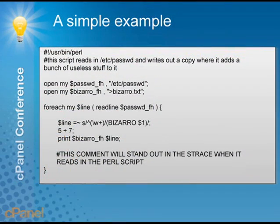We're going to have a simple example here first. This is a little Perl script — don't worry if you don't know Perl, it's not important. The first thing you'll see is we're invoking Perl with a shebang line, then a comment describing what the script does. It's opening two files: /etc/passwd for reading, and bizarro.txt for writing. After that, there's a foreach loop going through each line of /etc/passwd and inserting the word 'bizarro'. This is not something you want to actually do on your server — it's just an example. We're just reading /etc/passwd and writing it out to a file with some changes to illustrate the example.